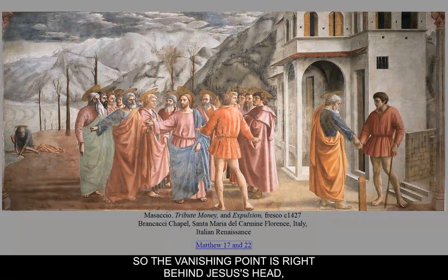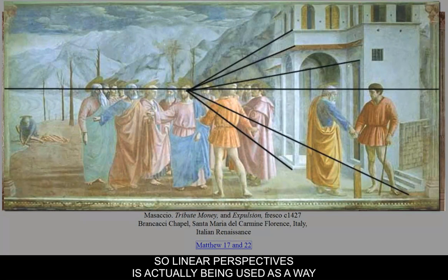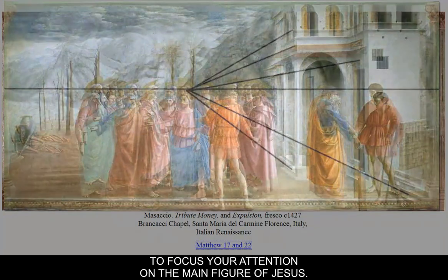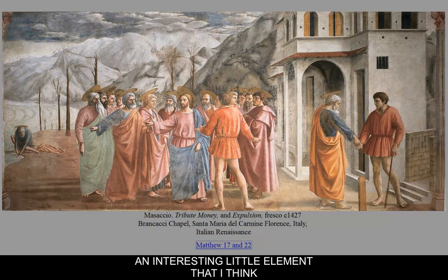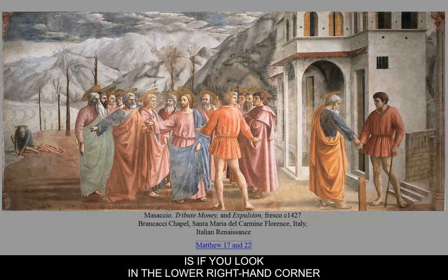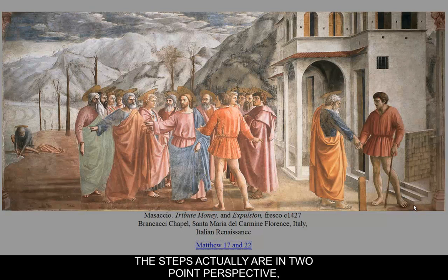So the vanishing point is right behind Jesus's head. Linear perspective is actually being used as a way to focus your attention on the main figure of Jesus. An interesting minor element: if you look in the lower right-hand corner, the steps are actually in two-point perspective, and they're pretty well done.